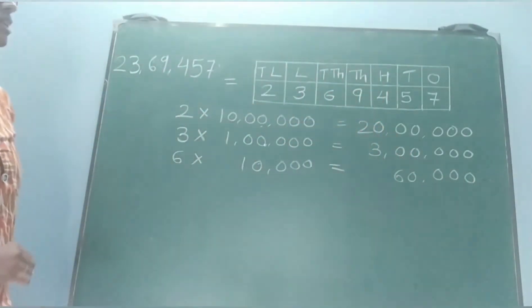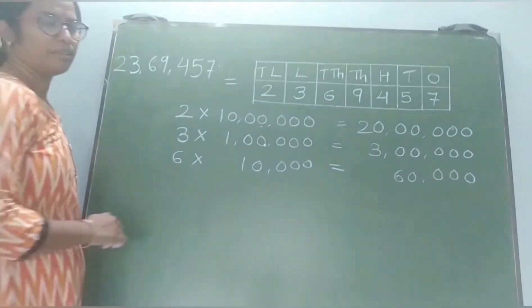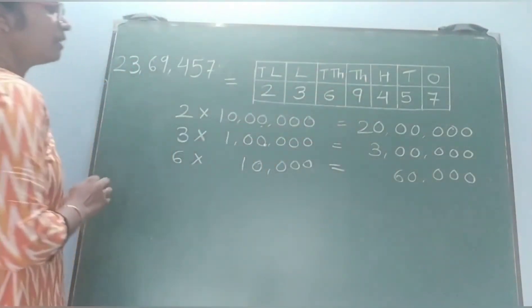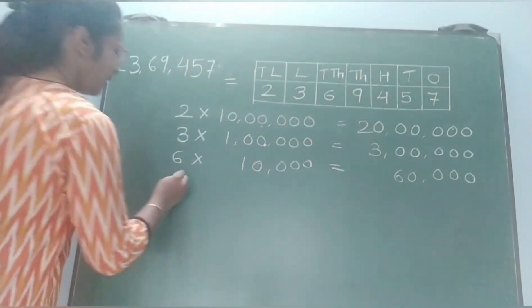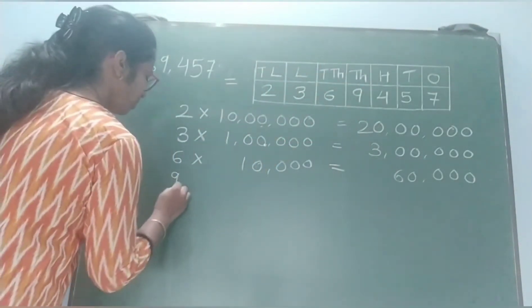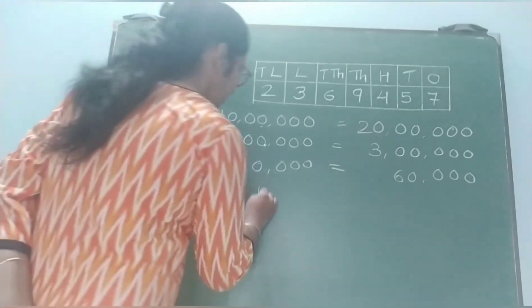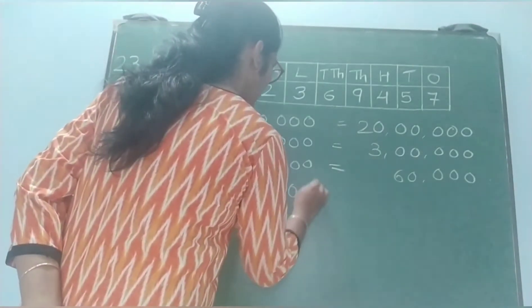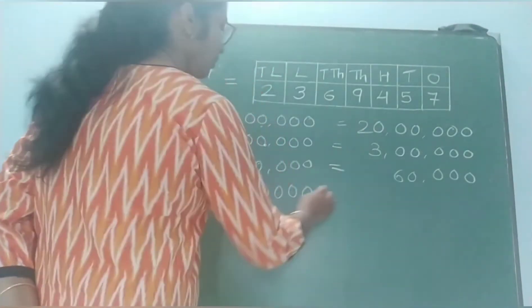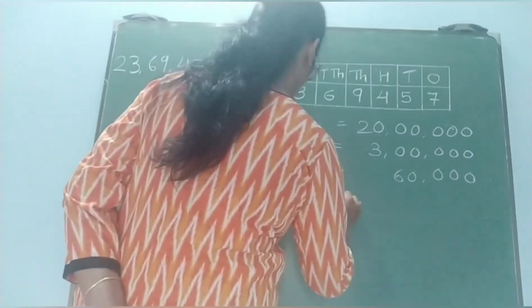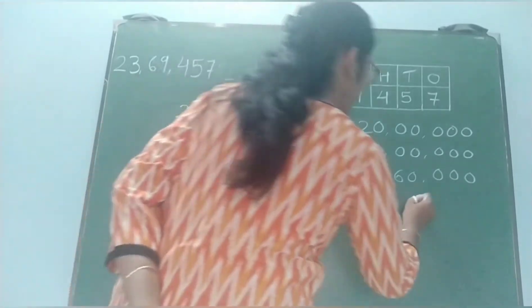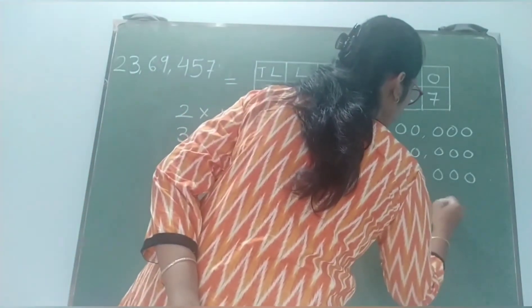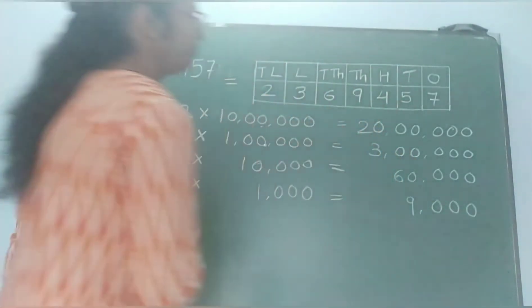Now see the next number. 9 is in the thousands place, so 9 gets multiplied by 1 thousand. So the value of 9 is 9 thousand.